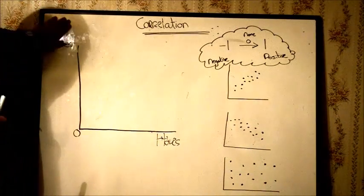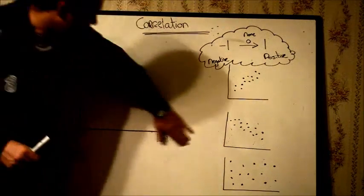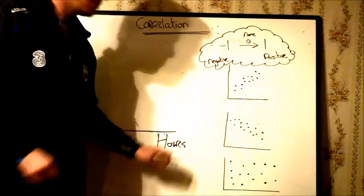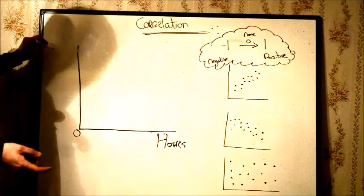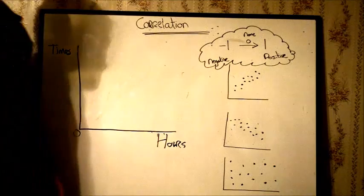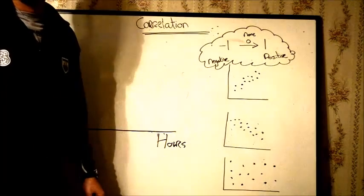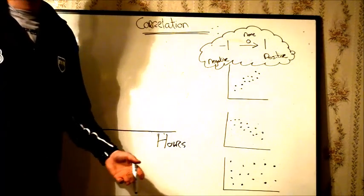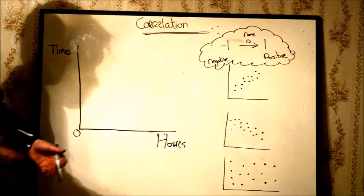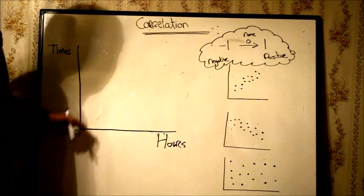Last of them, we look at no correlation. So let's look at the hours you spend studying and the times you get in a race. Well, I suppose common sense would say if you study a lot, it's not going to make you any quicker or slower. Or if you don't study a lot, it's not going to make you any quicker or slower running the 100 meter race.